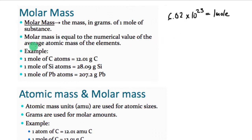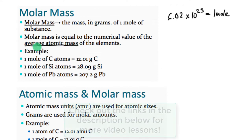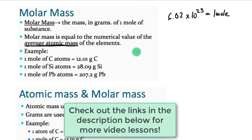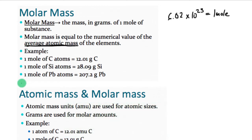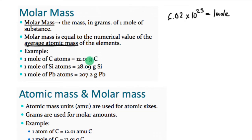The molar mass is actually equal to the number on the periodic table — that average atomic mass — for each of the elements. That number has dual use: it tells us about the atomic mass and also about the molar mass. For example, if I take one mole of carbon — 6.02 times 10 to the 23rd atoms — and put them on a balance, the mass comes out to 12.01 grams, the same number as the average atomic mass on the periodic table for carbon.